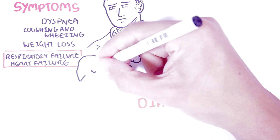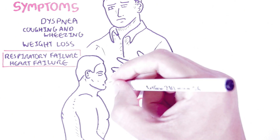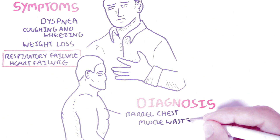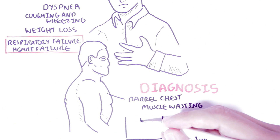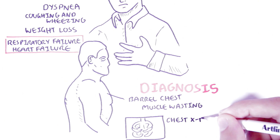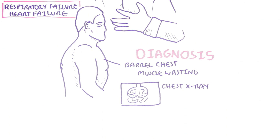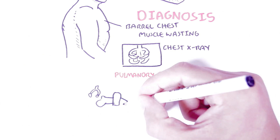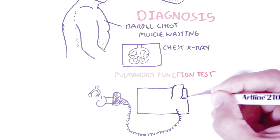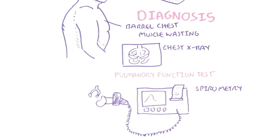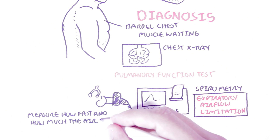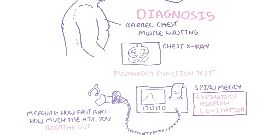For diagnosis, individuals may show signs of a barrel chest, which is a protruding chest, as well as muscle wasting. Chest X-rays are often used to diagnose emphysema, but if that does not reveal anything substantial, a CT scan may be required. Emphysema is usually diagnosed using a pulmonary function test, performed with a machine known as a spirometer, which measures expiratory airflow limitations — essentially how fast and how much air you breathe out. A low result is an indication of emphysema.